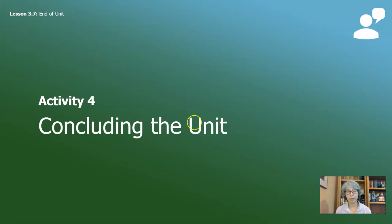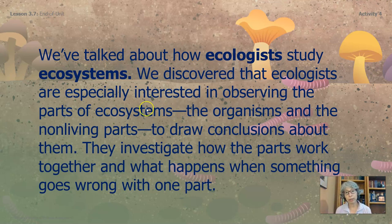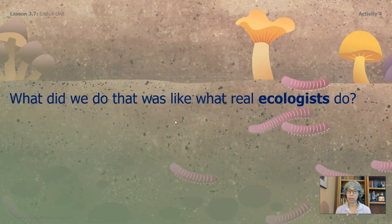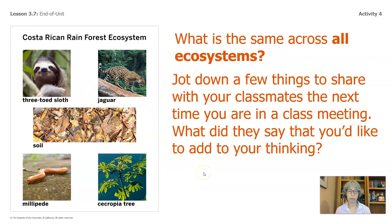It's time to conclude the unit. We've talked about how ecologists study ecosystems. We discovered that ecologists are especially interested in observing the parts of ecosystems — the organisms and the non-living parts — to draw conclusions about them. They investigate how the parts work together, and what happens when something goes wrong with one part. We studied this ecosystem and learned many things about the organisms in it and how they're connected. We learned about other ecosystems too. What is the same across all ecosystems? Jot down a few things to share with your classmates at your next class meeting, and write down their ideas too.